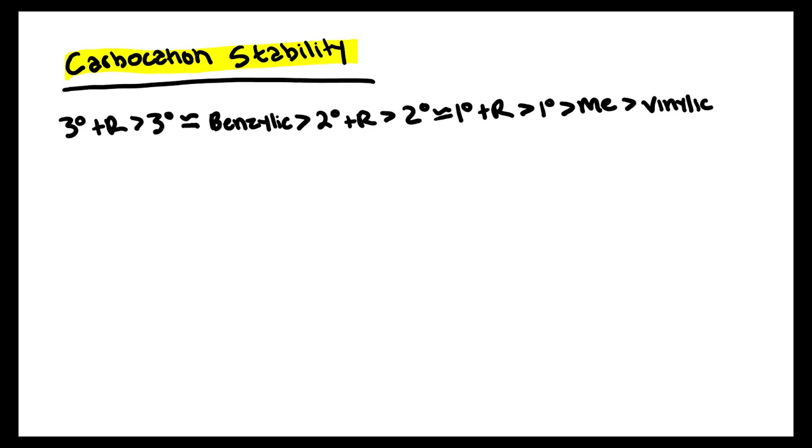This is the general trend in terms of what carbocations are more stable versus the least stable. We're going to start looking at tertiary plus resonance. When you look at tertiary plus resonance, that has the benefit of both being tertiary, so it has that hyperconjugation, and it also has additional resonance structures.